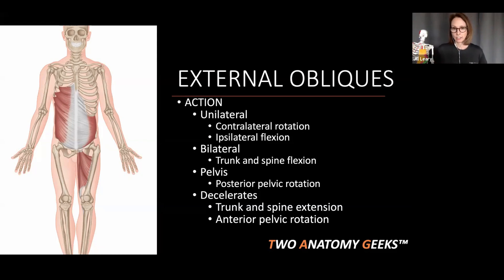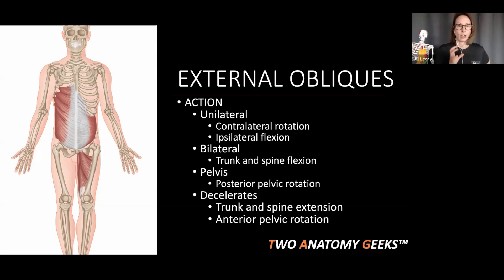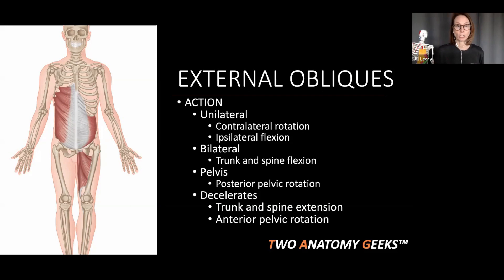When we look at the unilateral actions of the external oblique, they will do ipsilateral flexion — same side bending. Ipsilateral always means the same side, so your right external oblique will laterally flex or side bend your vertebral column to the right. Your left external oblique will side bend your vertebral column to the left. What gets a little tricky is that the external oblique does contralateral rotation of the spine — your right external oblique will rotate you to the left.